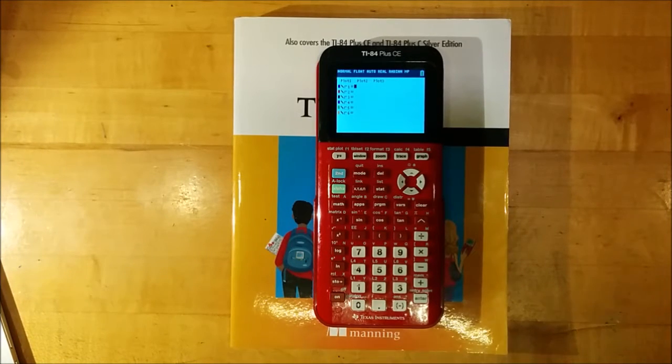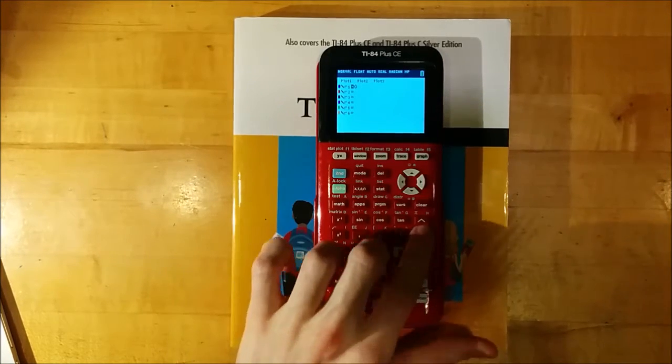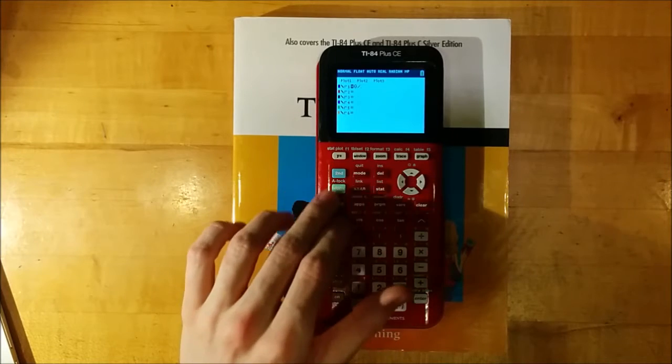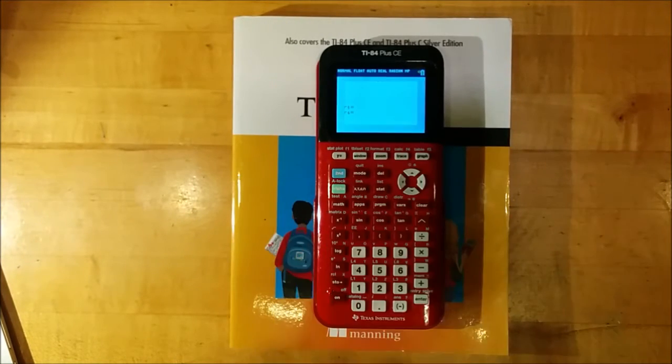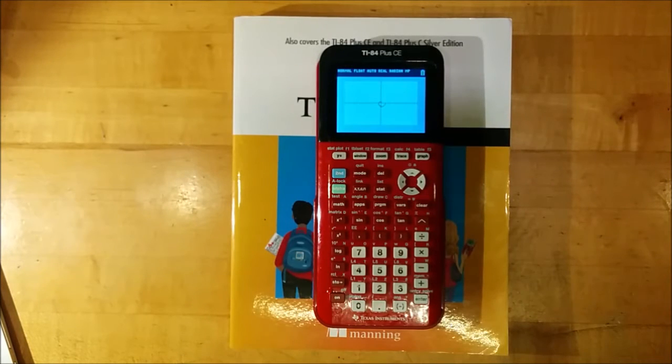Polar graphing lets you graph functions where R is the dependent variable and theta is the independent variable. Let's try something that will create a simple spiral. We can do theta over pi, and you can type pi by pressing second and then the exponent key. If we graph this, you'll see we get a very small spiral on the graph screen.